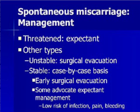For threatened miscarriage, management is always expectant, and roughly half these patients will go on to have normal deliveries. For all other types of miscarriage, hemodynamically unstable patients are generally taken for urgent D&C. For hemodynamically stable patients, management is on a case-by-case basis. The obstetric literature is split on this issue: some advocate early surgical evacuation and some advocate watchful waiting.